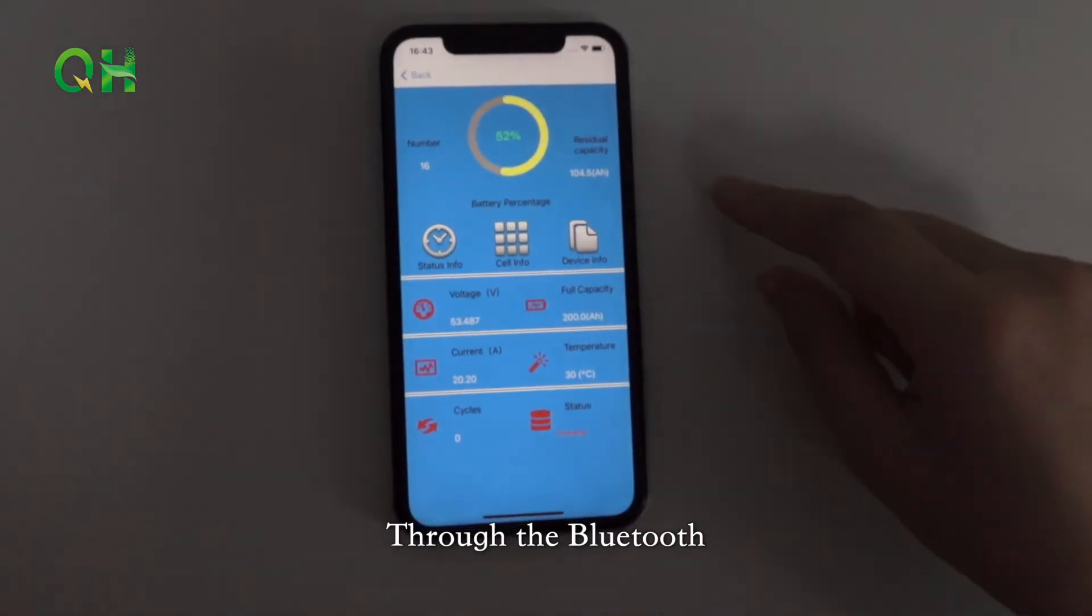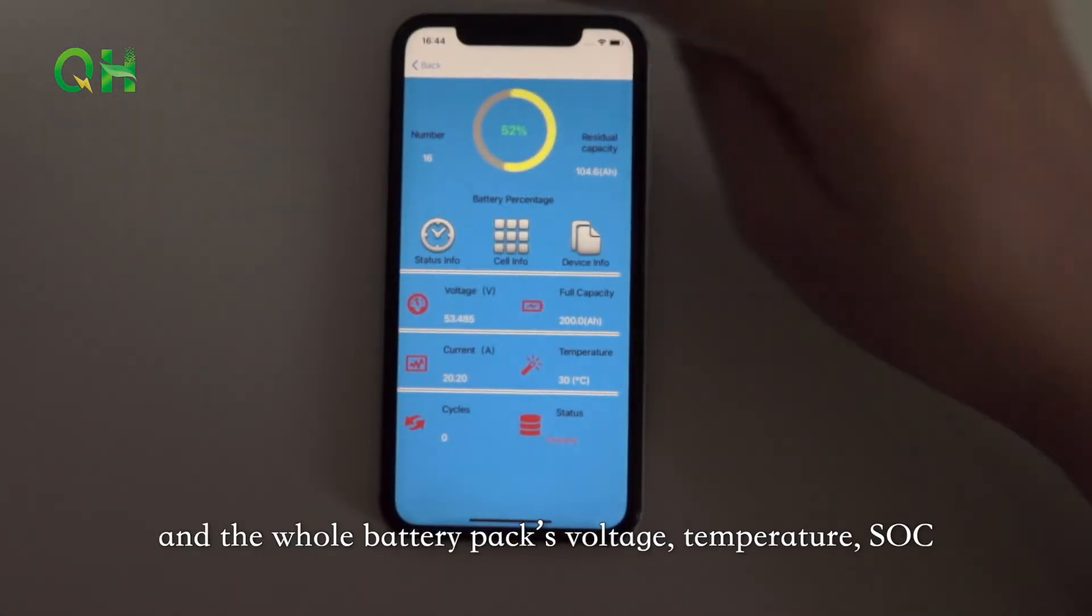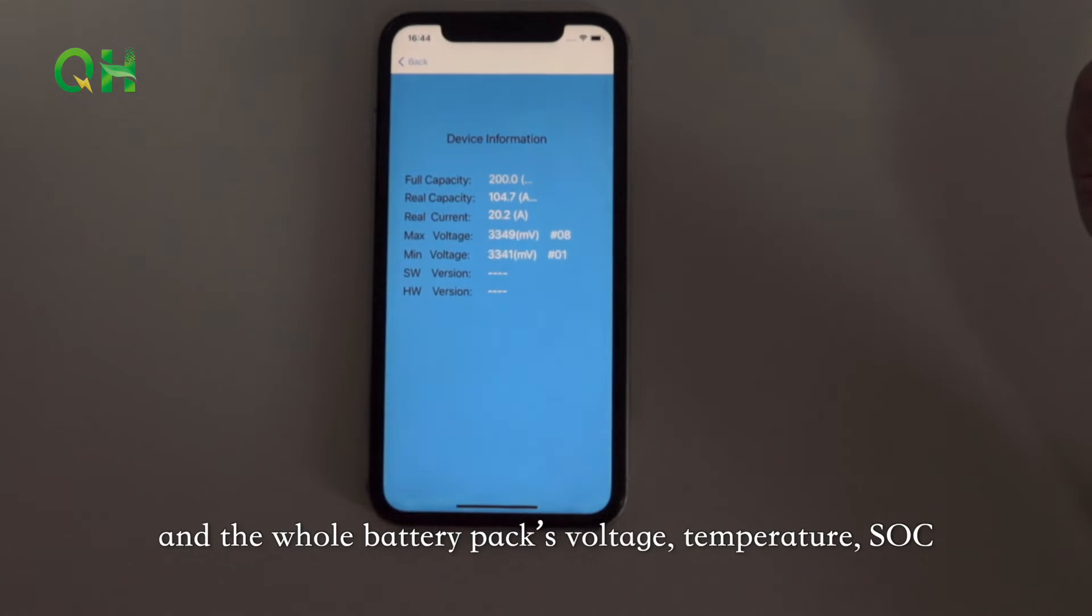Through the Bluetooth, you can check each battery cell's voltage and the whole battery pack's voltage, temperature, SOC, and more information on the app.